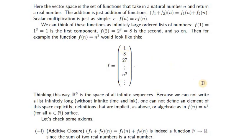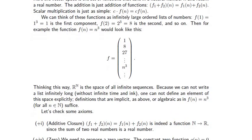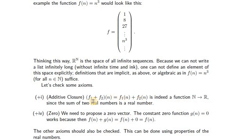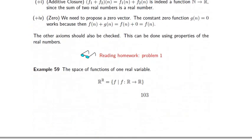The sum of two functions of a natural number is still a function of a natural number. There's a zero function where all entries are 0, and adding that to another function still gives you the same function. All these properties follow from the properties of real numbers.